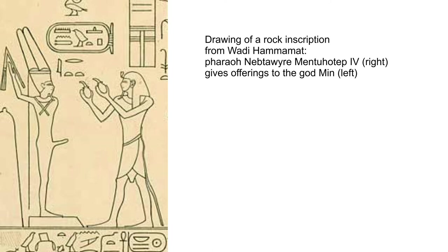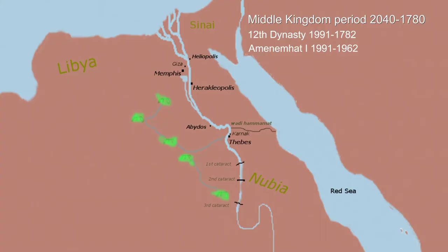There is no record of what exactly happened, but Mentuhotep IV died and Amenemhat I became the pharaoh. We can only speculate what happened between him getting the lid and him becoming pharaoh. Amenemhat brought an end to the 11th dynasty and was the first pharaoh of the 12th dynasty.